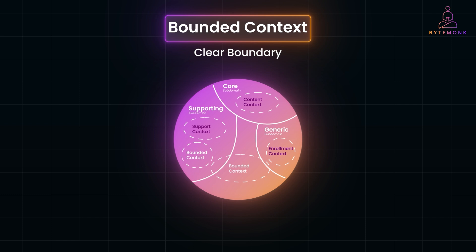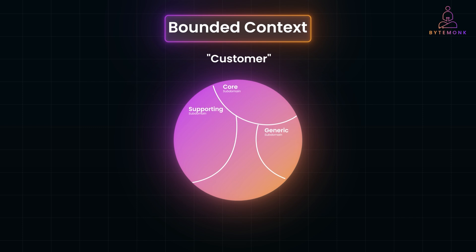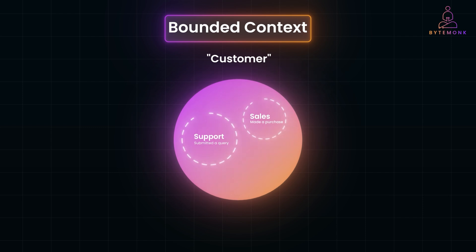It ensures that the terms and concepts are consistent and meaningful only within their context. Think of it as a container for a specific part of the business domain. Without bounded context, terms like 'customer' or 'order' could create confusion. For example, in a sales context, 'customer' might refer to someone who has made a purchase. In a support context, 'customer' could mean anyone who has submitted a query, whether or not they have made a purchase. By defining bounded contexts, you can avoid mixing these meanings and ensure each concept is well-defined within its scope.